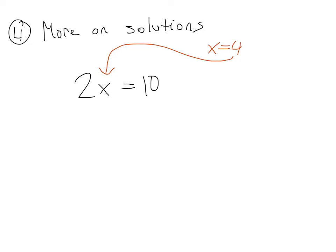So 2x really means 2 times x, so now we're taking 2 times 4, and we're saying, does that equal 10? We'll put a little question mark. Well, 2 times 4 is 8. And last time I checked, 8 did not equal 10, so we would say that 4 is not a solution.